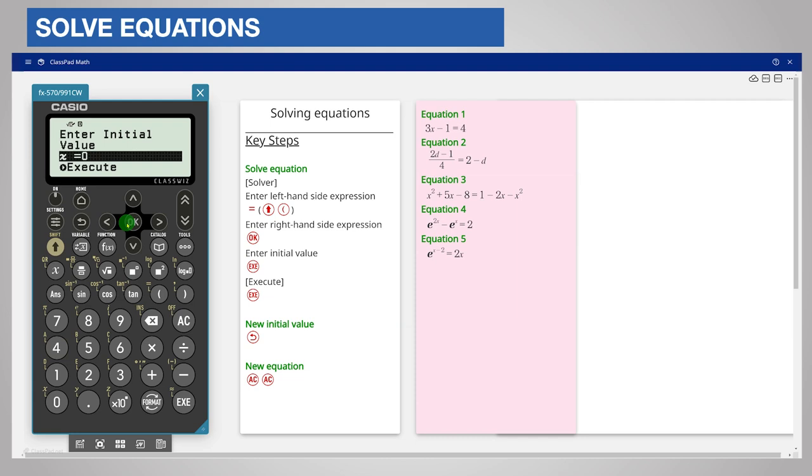The calculator needs an initial value to search for a solution to this equation. You can use the suggested value of zero in most cases. Scroll down to execute and then press the ok or execute key. The calculator displays the result as a decimal. The L minus R equals 0 on the bottom of the screen means that the solution gives the same exact value for each side of the equation.